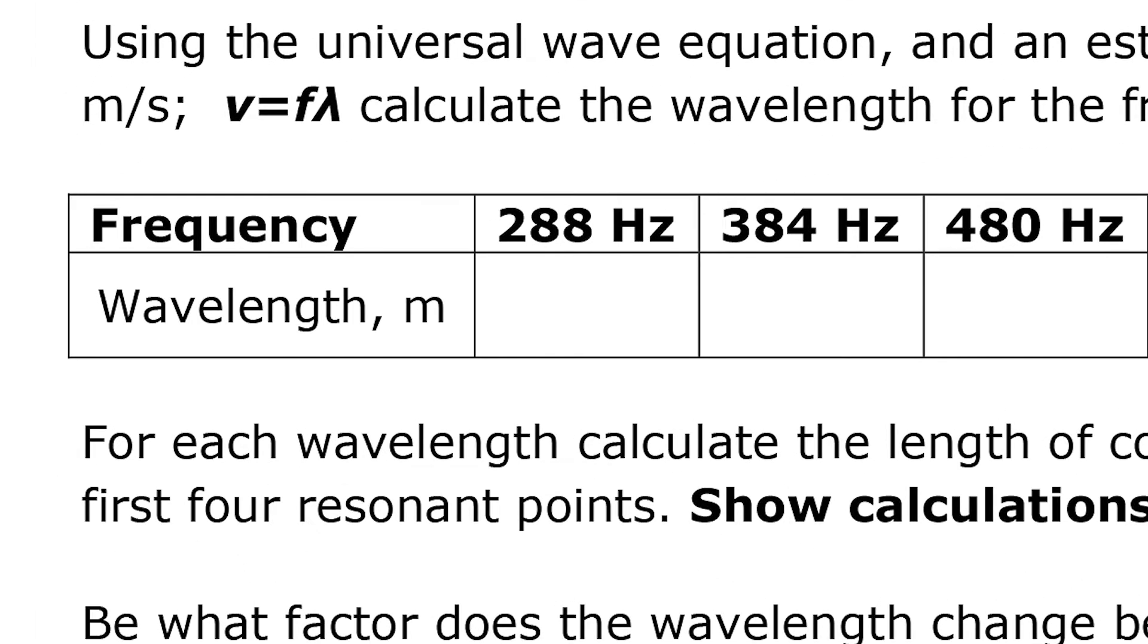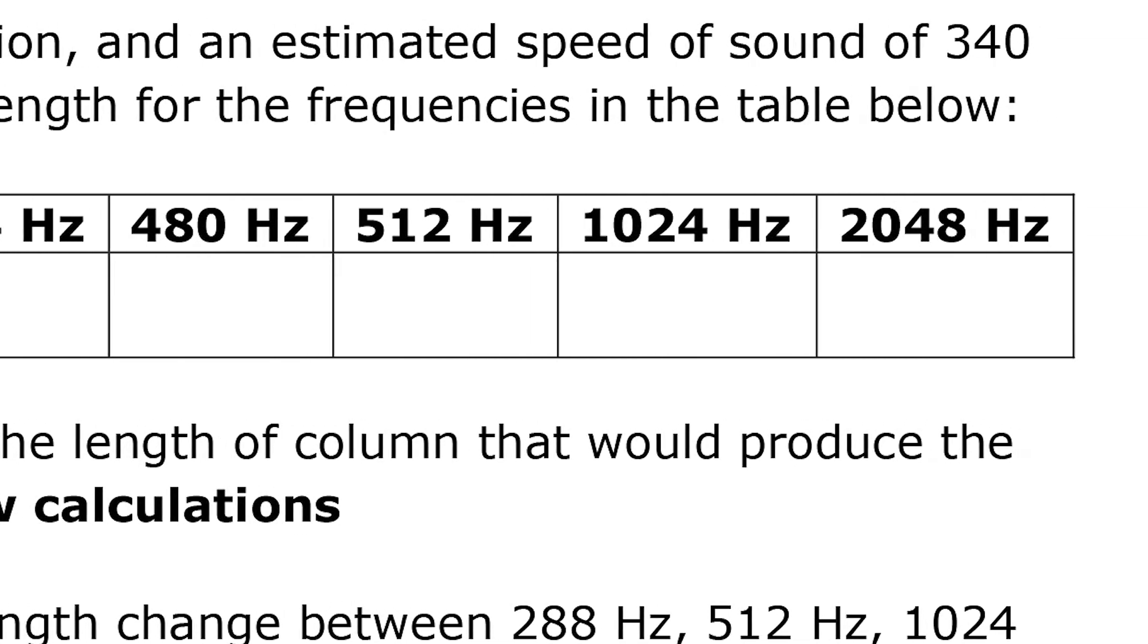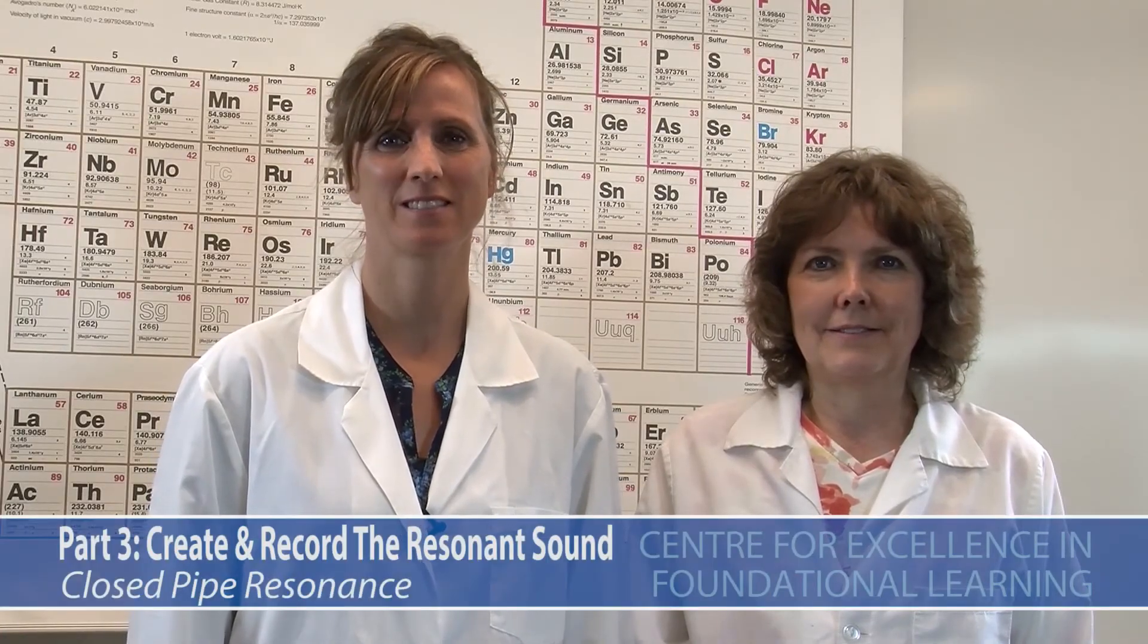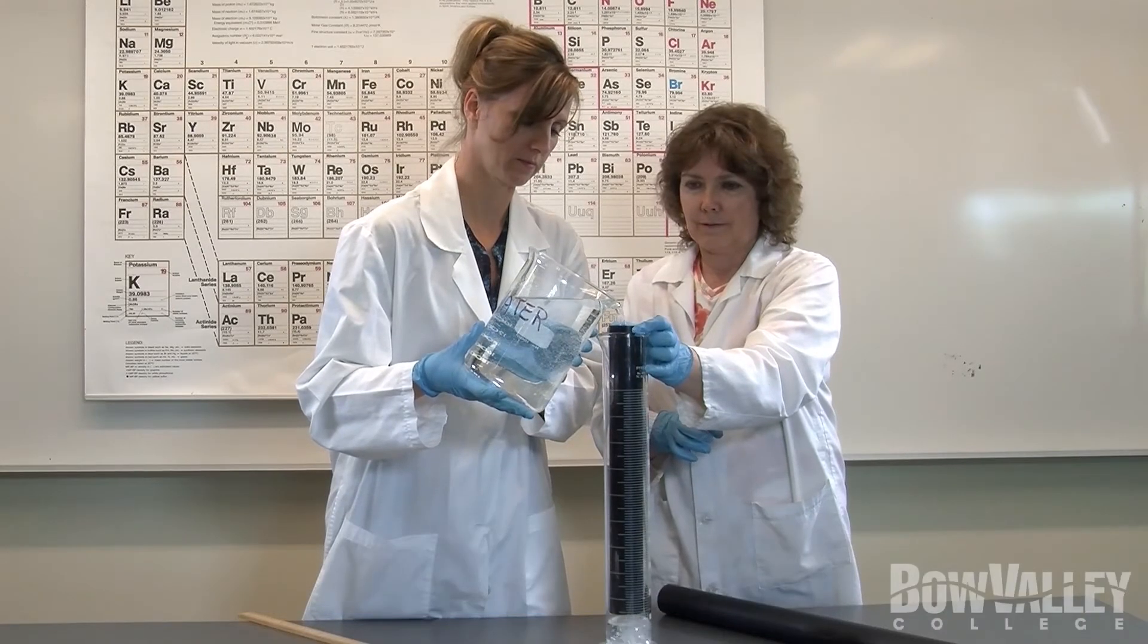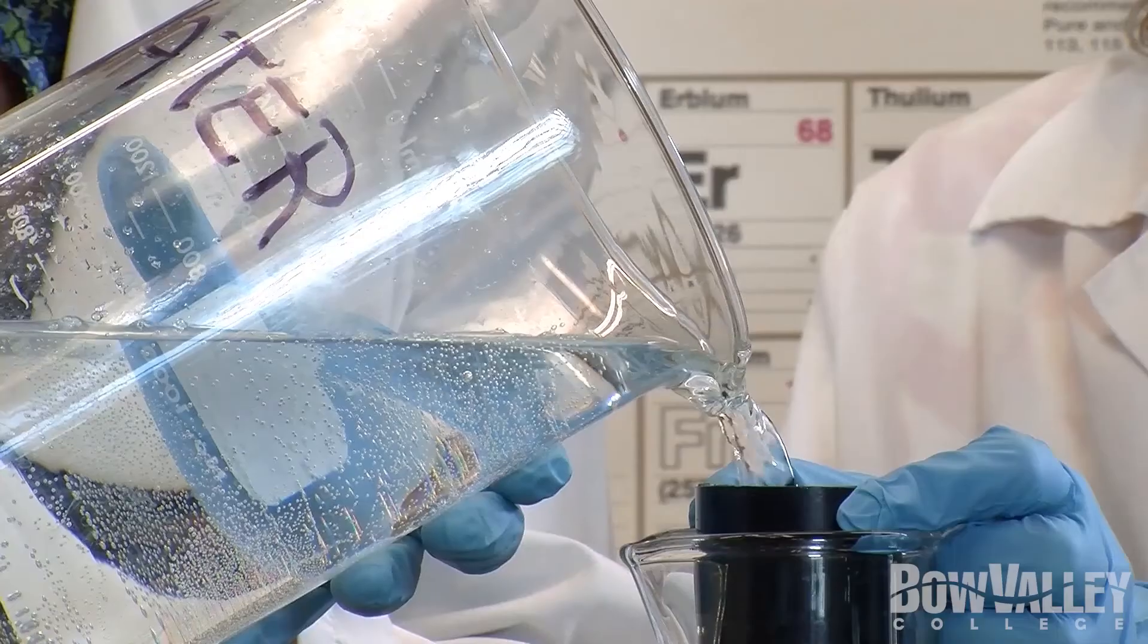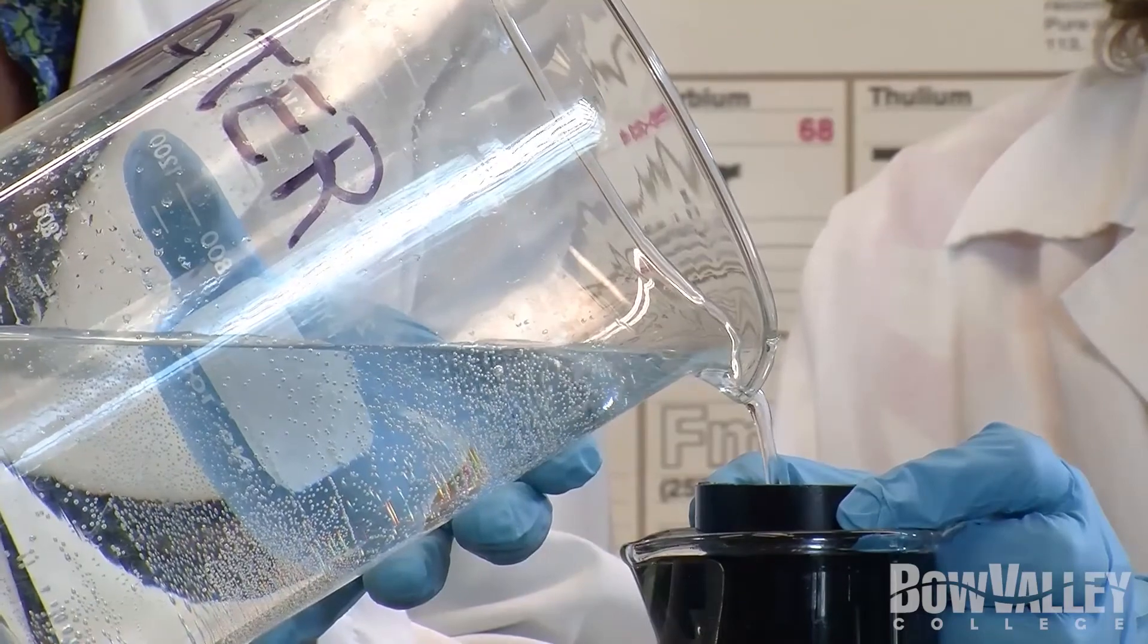Use your pre-lab to predict the approximate lengths of where the resonance points will be heard. You will need a lab partner for this experiment. Add water to the graduated cylinder while the pipe is immersed as deep as possible. Add water to the apparatus until the level reaches the lip of the graduated cylinder.